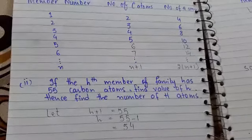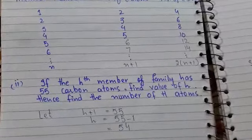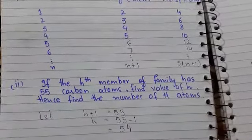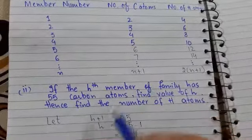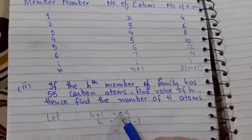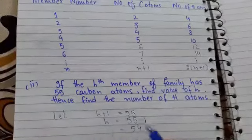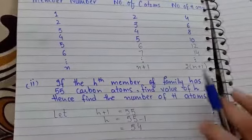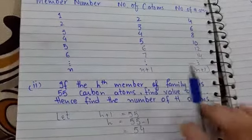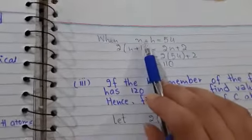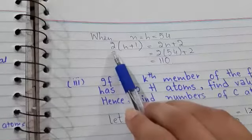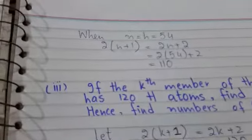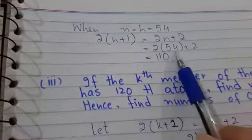Question 2 states: if the Hth member of the family has 55 carbon atoms, find the value of H, then find the number of H atoms. Using the carbon atoms formula, where n and H are equivalent: H + 1 = 55. Subtracting 1 from both sides gives H = 54. To find the number of hydrogen atoms, we use the formula 2(n + 1) and substitute n = 54.